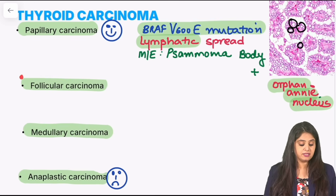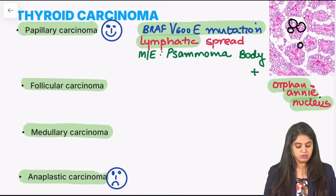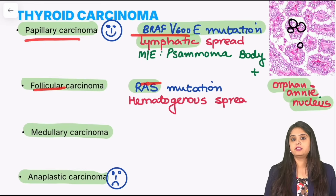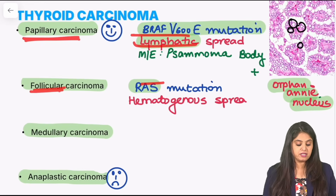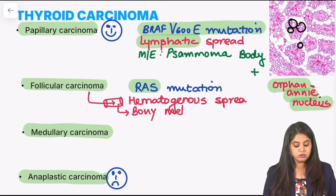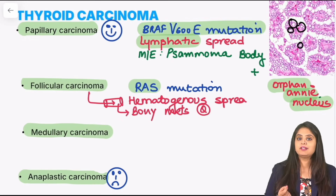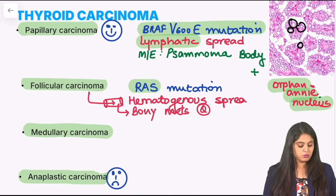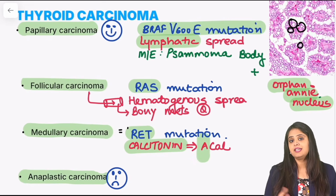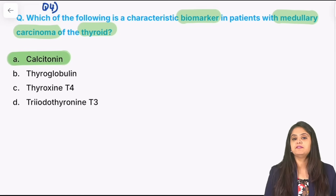For follicular carcinoma, the most common mutation is RAS mutation. Papillary spreads lymphatically; follicular tends to go hematogenously into the blood, and can spread to bone — that was a last-year FMG exam question about bony metastasis. For medullary carcinoma, the mutation is RET mutation, and the tumor marker is calcitonin. If calcitonin becomes amyloid, it forms AA-Cal type amyloid.